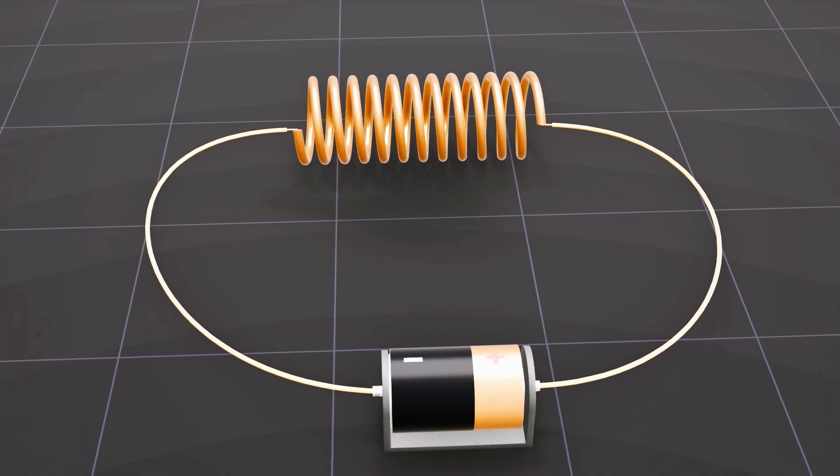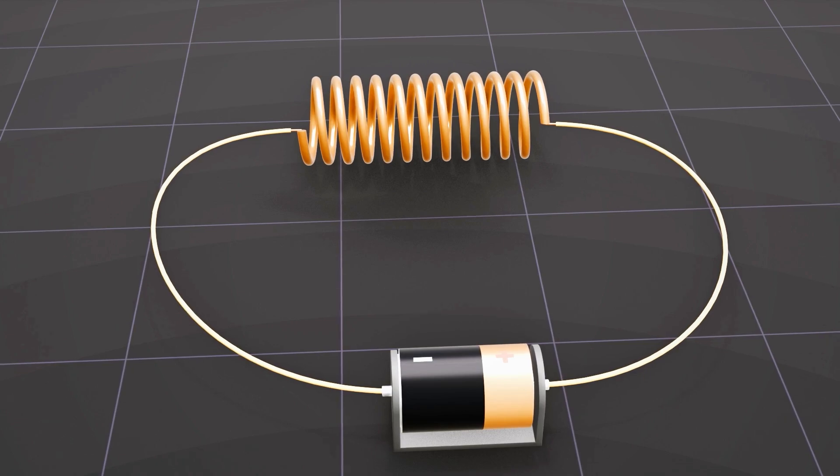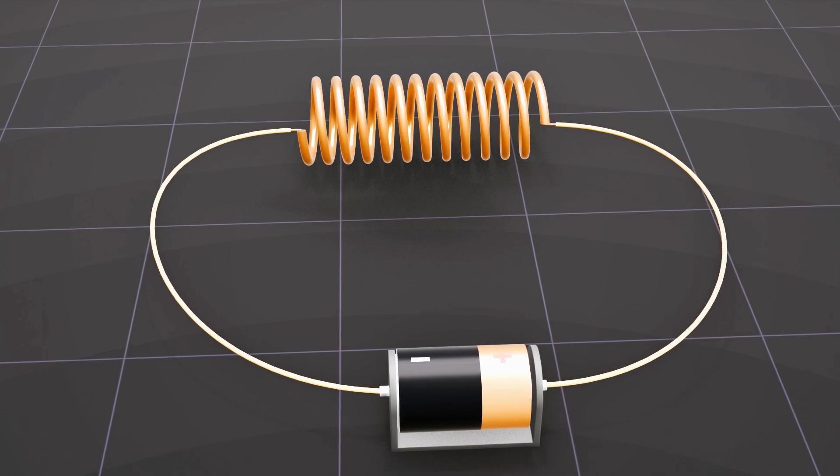An electromagnet shows that an electric current can create magnetism in a metallic wire. But can the reverse also be true?